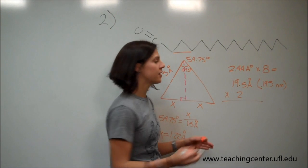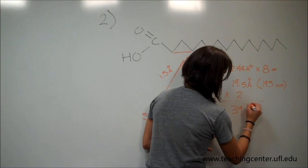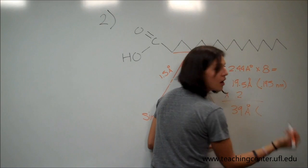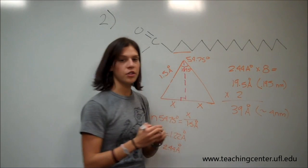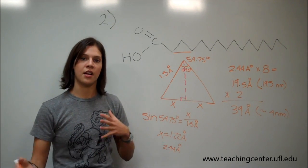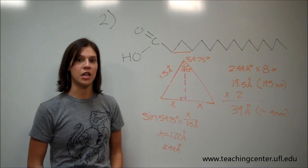So the final distance will be 39 angstroms long, or about 4 nanometers. And I know this question asks, how does this distance compare to the lipid bilayer? Well, the lipid bilayer is actually about 4 nanometers long.